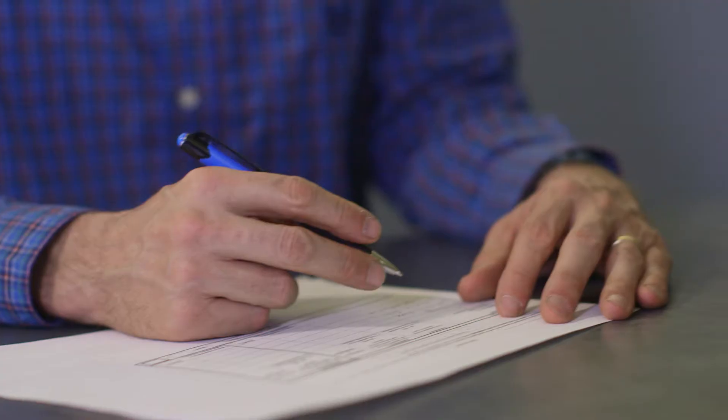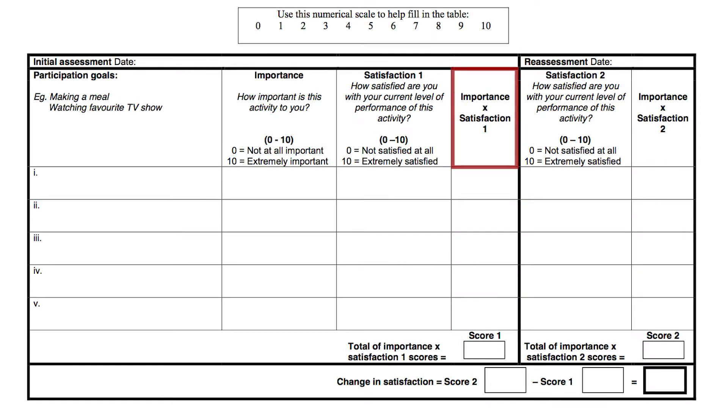For scoring the measure, multiply the importance score by the satisfaction score and add those up for each goal.